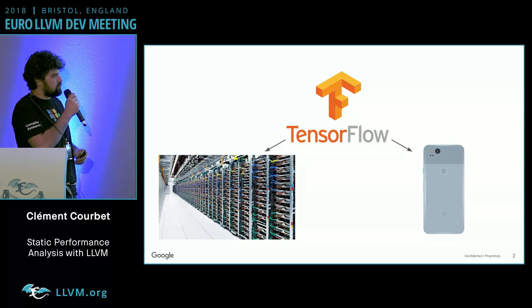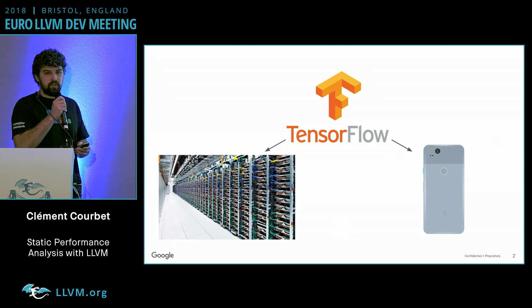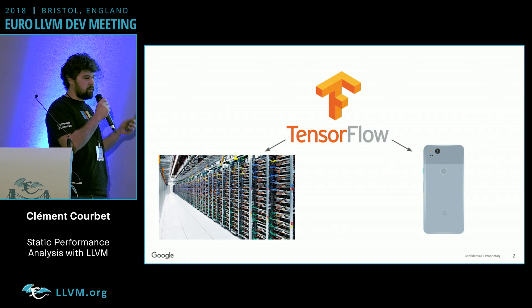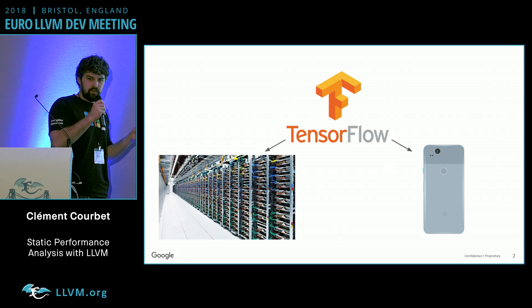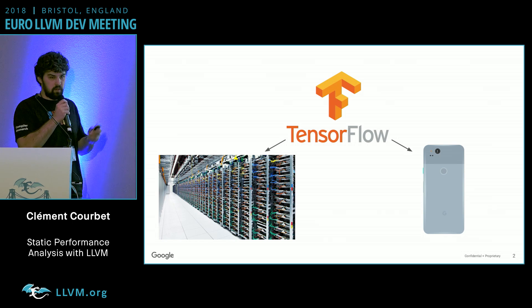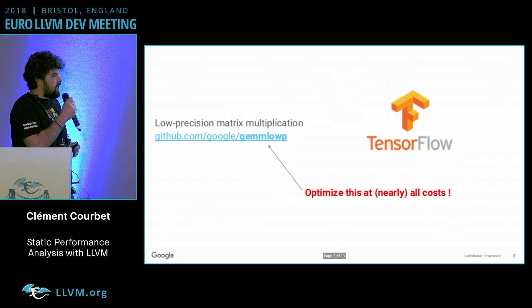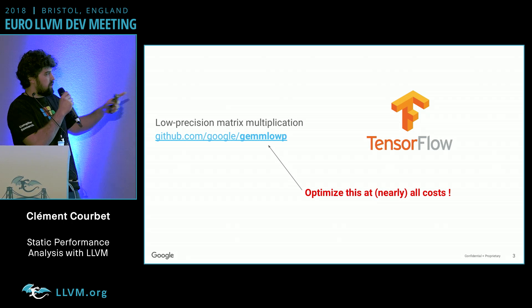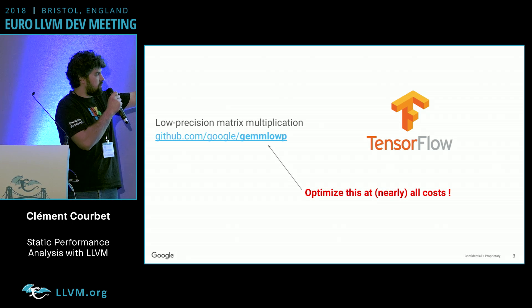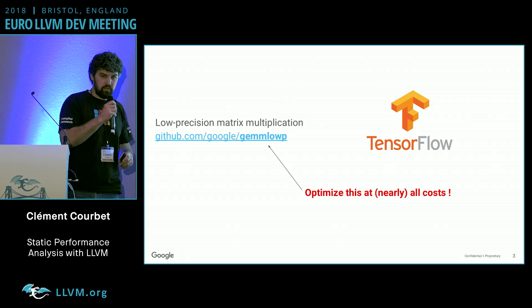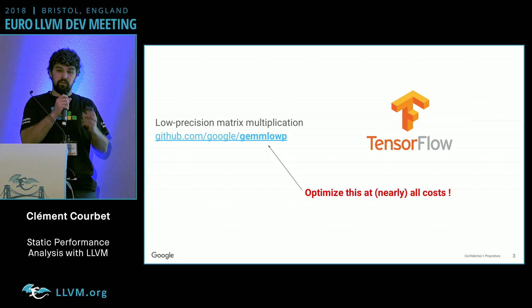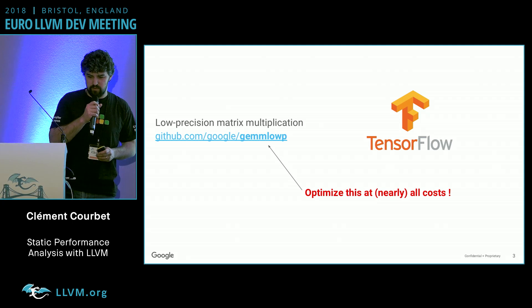An example of why we want to do that: we're doing a lot of machine learning at Google using a library called TensorFlow, both on our data centers and on user hardware. TensorFlow is all about multiplying tensors, so you really want to optimize this kernel called gemloop at pretty much all costs. You can spend a lot of engineering time and a lot of CPU time optimizing this.